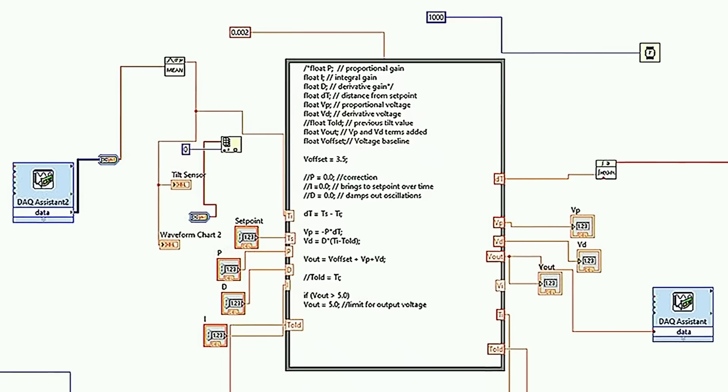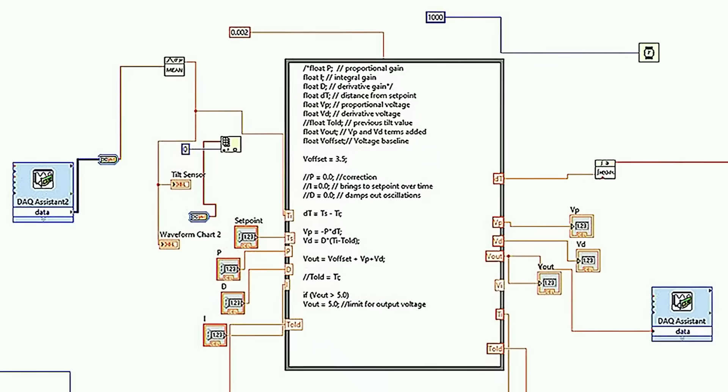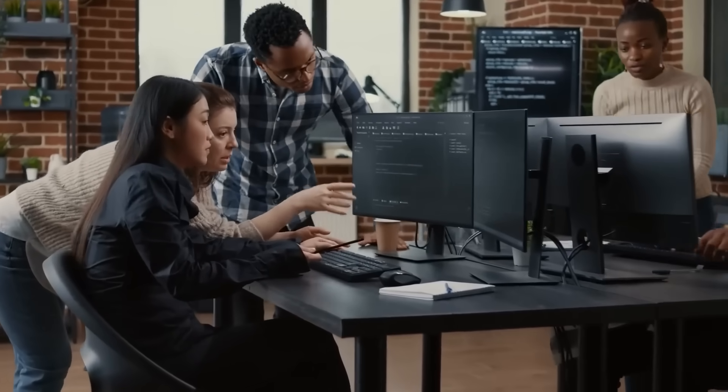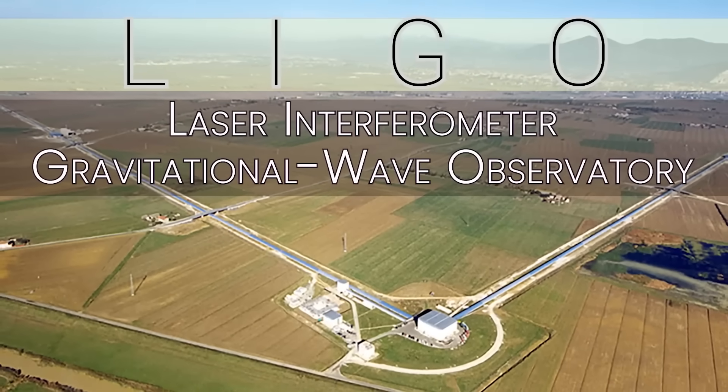Then correcting and compensating, applying compensatory signals to make a very stable and active control system. This type of technique is used in everything from these tabletop-type gravity experiments all the way up to the LIGO experiment that we've talked about many times,